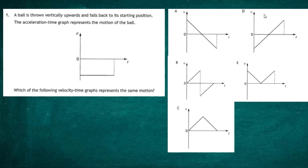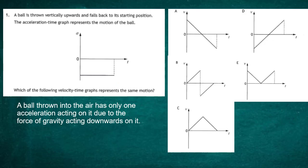The first thing to notice from the acceleration-time graph is that the acceleration over the journey is constant, represented by a straight horizontal line. It is also a negative acceleration, which ties in with the fact that from the moment the ball leaves your hand, the only acceleration acting on it is acceleration due to gravity. In our rules of motion, anything directed downward is negative.